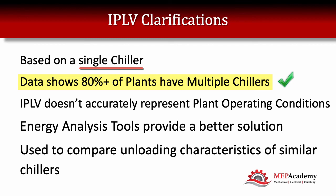IPLV is used to compare unloading characteristics of similar chillers. It's a simple calculation using the EERs at 25%, 50%, 75%, and 100% load — four points plugged into a formula to get the part load value. The chiller is sized for 100% load, which is the worst condition, but it will rarely see that — maybe one or two days a year. Most of the time it runs at part load. IPLV is also part of ASHRAE 90.1.